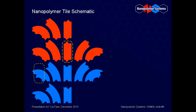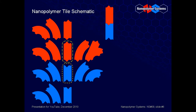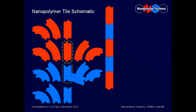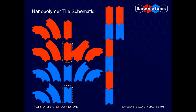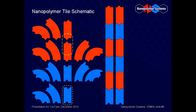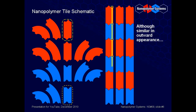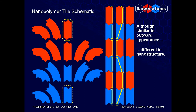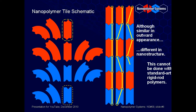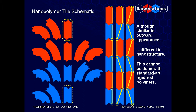Now we will show varieties of nanostructures resulting from monomer pairs, starting with the straight monomers. The male-female-male-female chain assembles into a straight rod. With a substitution of an inverting male monomer, another different straight rod is assembled. With both inverting monomers, a third straight rod polymer is assembled. Although these do appear to be similar, they are in fact nanostructurally quite different from each other. These differences do not exist in standard-art rigid rod polymers.